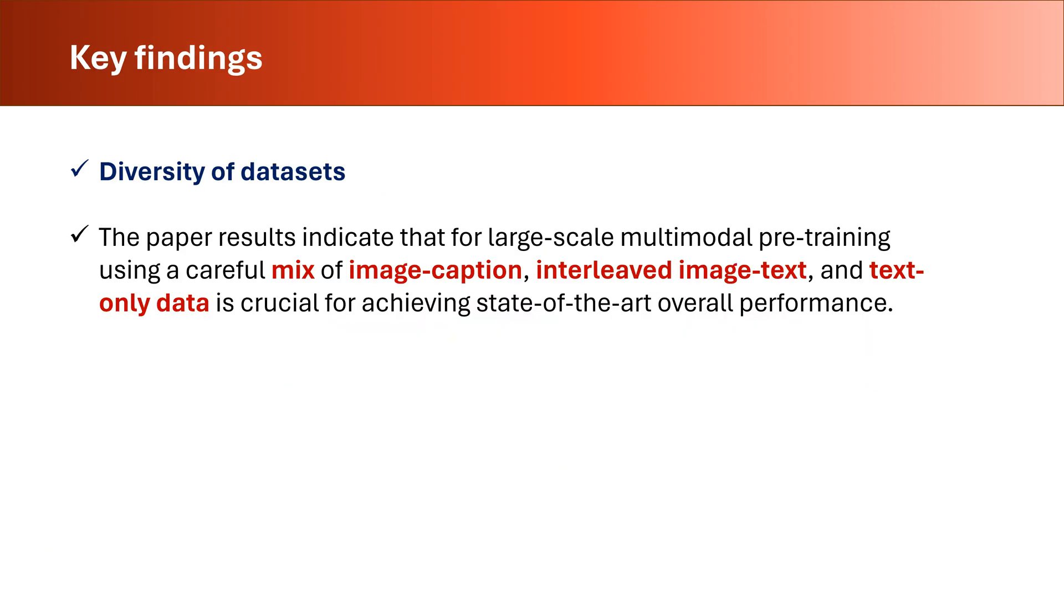At the heart of MM1's innovation is its unique approach to dataset diversity and architectural design. The model leverages a mix of image caption, interleaved image text, and text-only data, setting a new benchmark in AI performance. The key new finding here is that by proper combining of text and image data, a higher accuracy can be achieved.